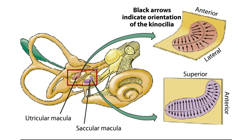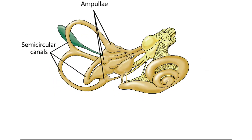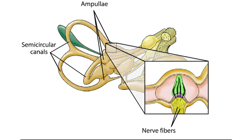Whereas the otolith organs are primarily concerned with head translations and orientation with respect to gravity, the semicircular canals sense head rotations arising either from self-induced movements or from angular accelerations of the head imparted by external forces. Each of the three semicircular canals has at its base a bulbous expansion called the ampulla, which houses the sensory epithelium or crista that contains the hair cells.